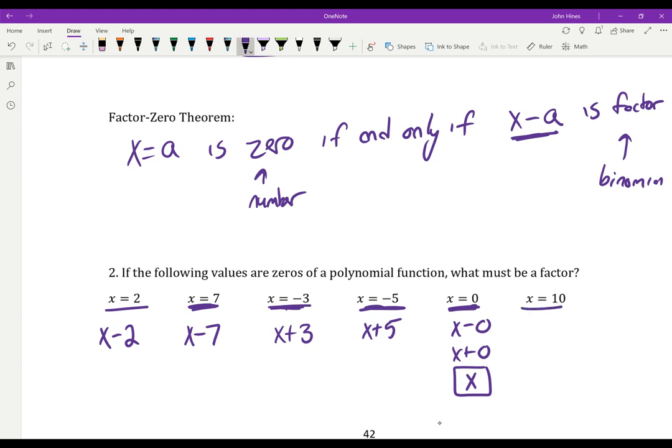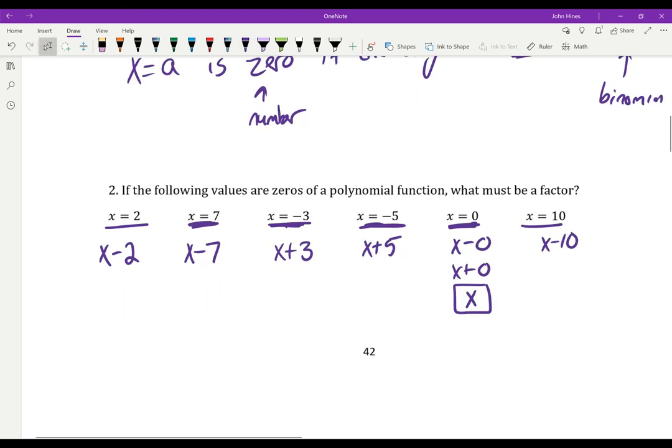And finally, if I have a 0 at 10, what's my factor? x minus 10. So it's this opposite relationship here. If your 0 is negative, your factor is going to have a plus. If your 0 is positive, your factor is going to have a minus sign.